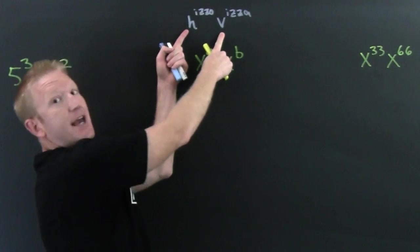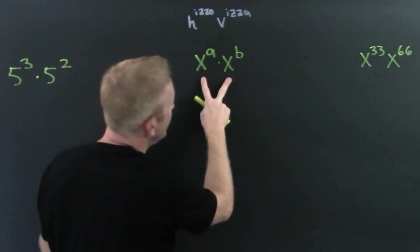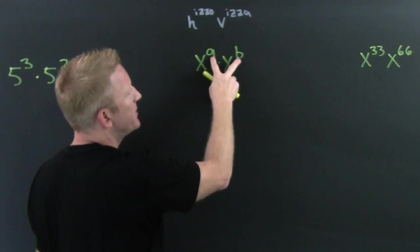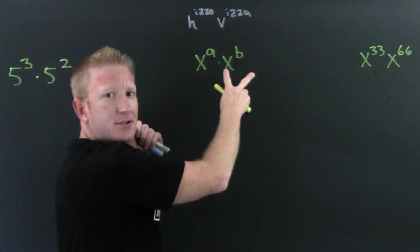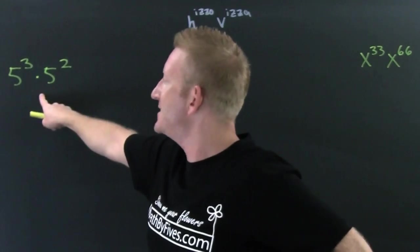Here you don't have the same base so you can't use the power rule on this. If you have the same base and you're multiplying, what do you do to their exponents?